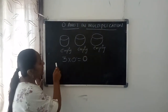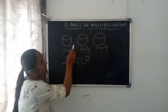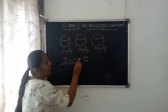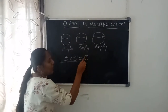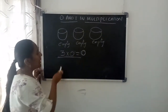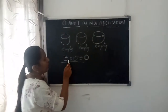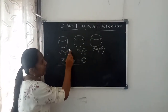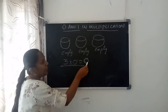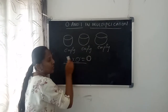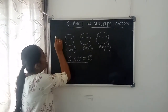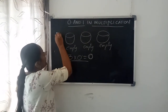If we multiply any number with zero, the result will also be zero. Okay, remember this. If you multiply any number with zero, the product will also be zero. Okay, this is zero multiplication.